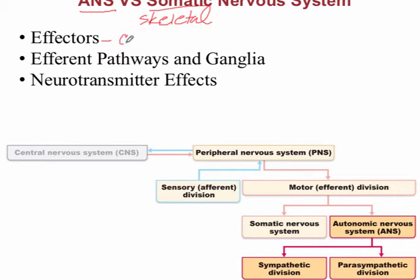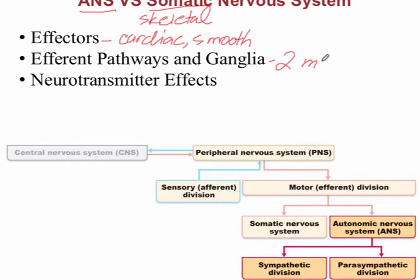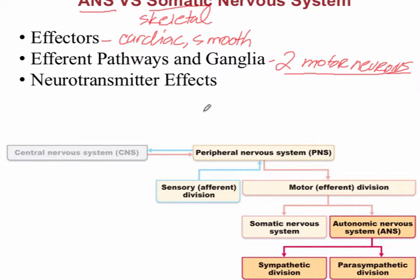The efferent pathways differ from the somatic nervous system: the autonomic nervous system has two motor neurons, whereas the somatic nervous system has only one. The neurotransmitter effects are the most significant aspect — this occurs because of neurotransmitters secreted from the postganglionic neuron. The two neurotransmitters in the autonomic nervous system are norepinephrine and acetylcholine — the same acetylcholine released in the somatic nervous system.